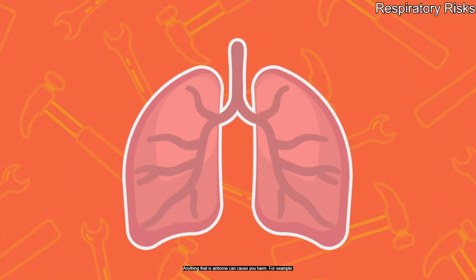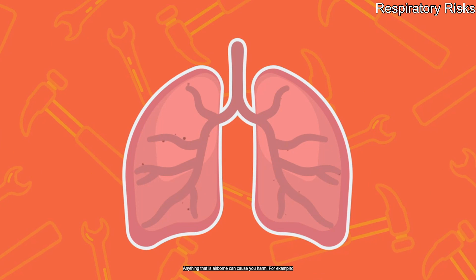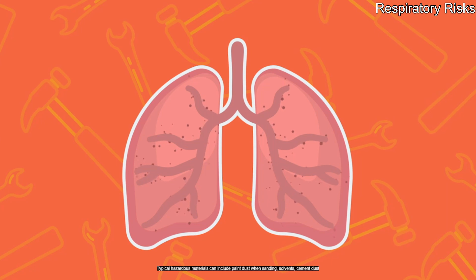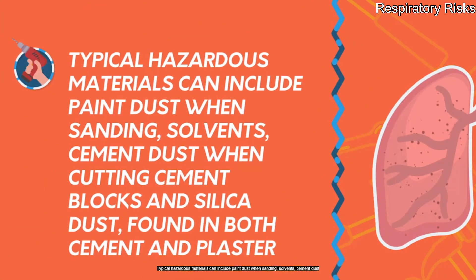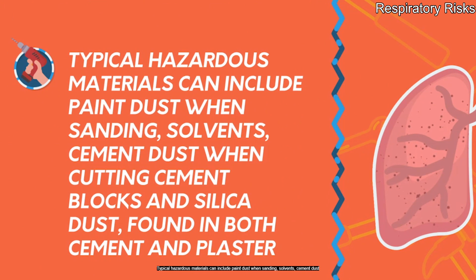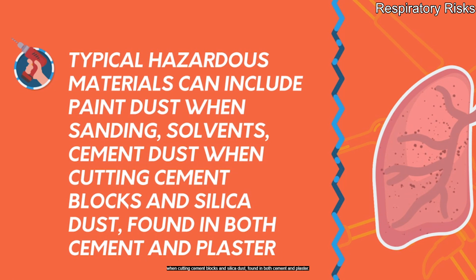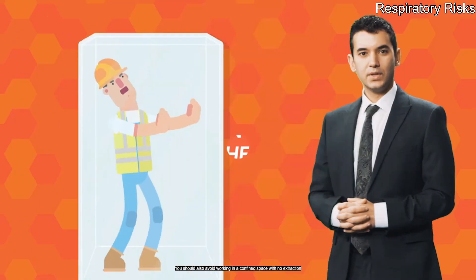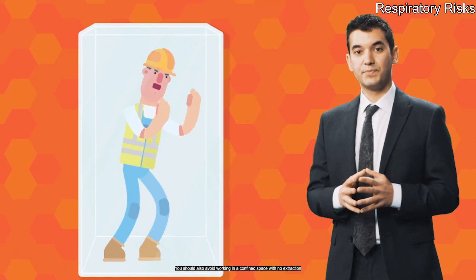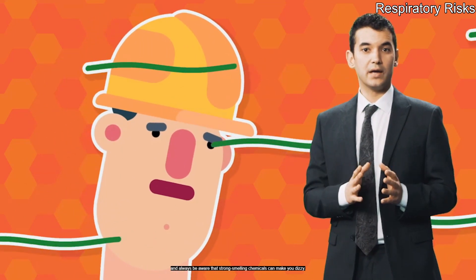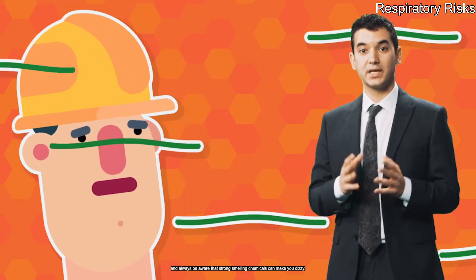Anything that is airborne can cause you harm. For example, dust and fumes can cause occupational lung disease. Typical hazardous materials can include paint dust when sanding, solvent, cement dust when cutting cement blocks, and silica dust found in both cement and plaster. You should also avoid working in a confined space with no extraction, and always be aware that strong smelling chemicals can make you dizzy.